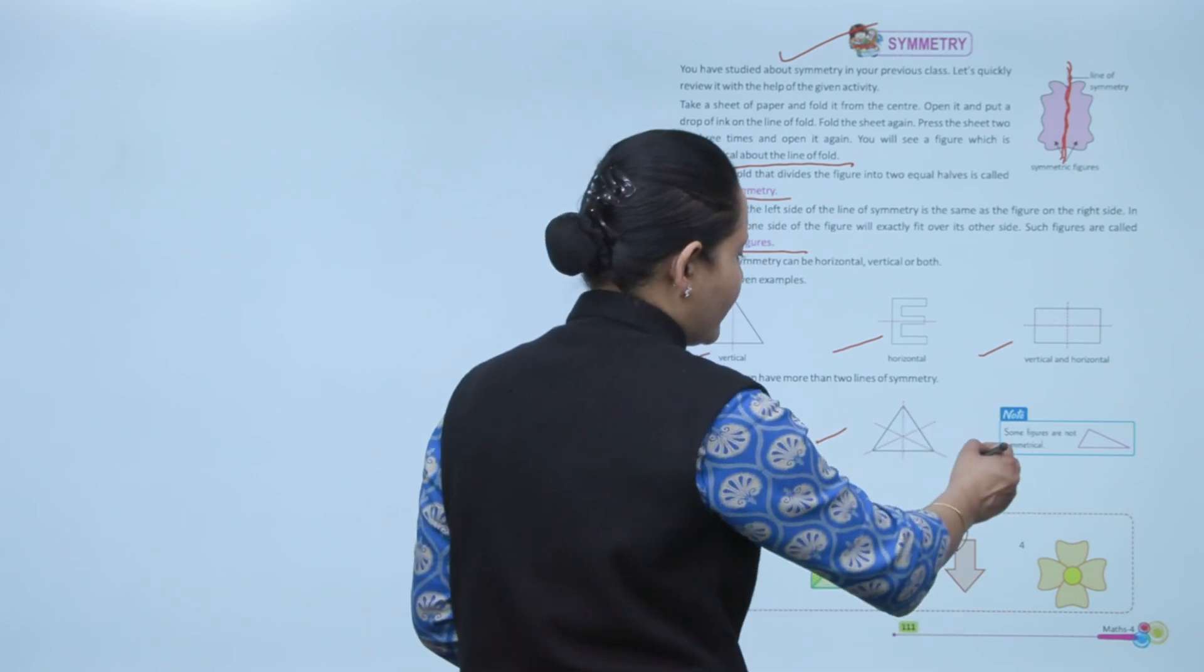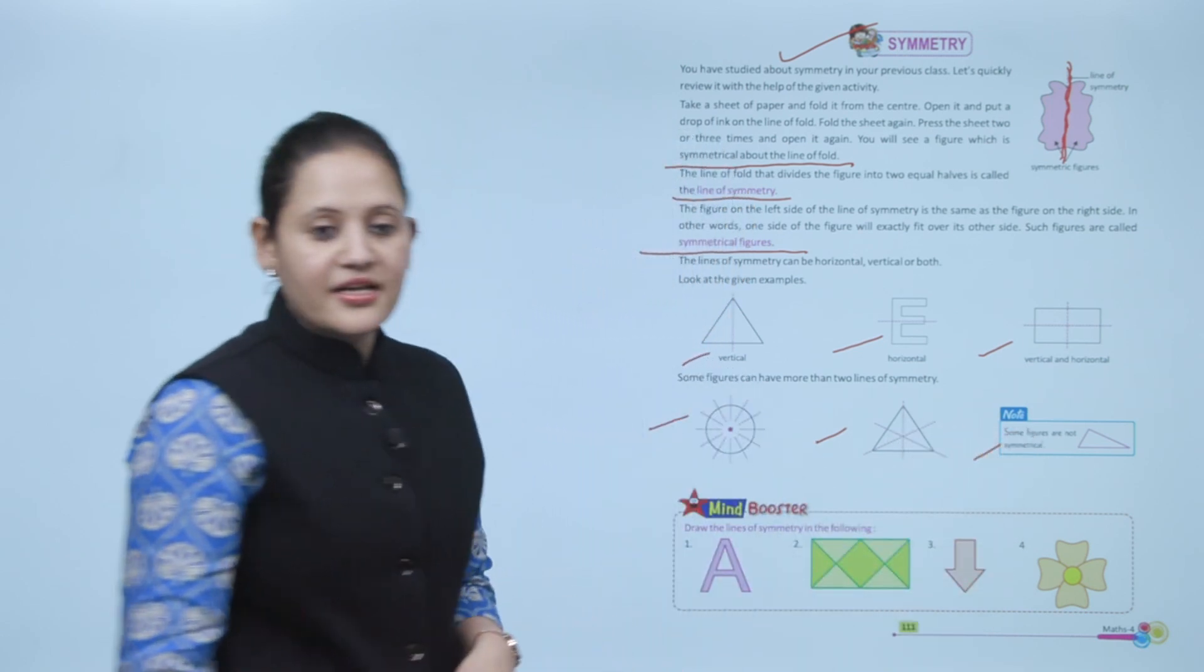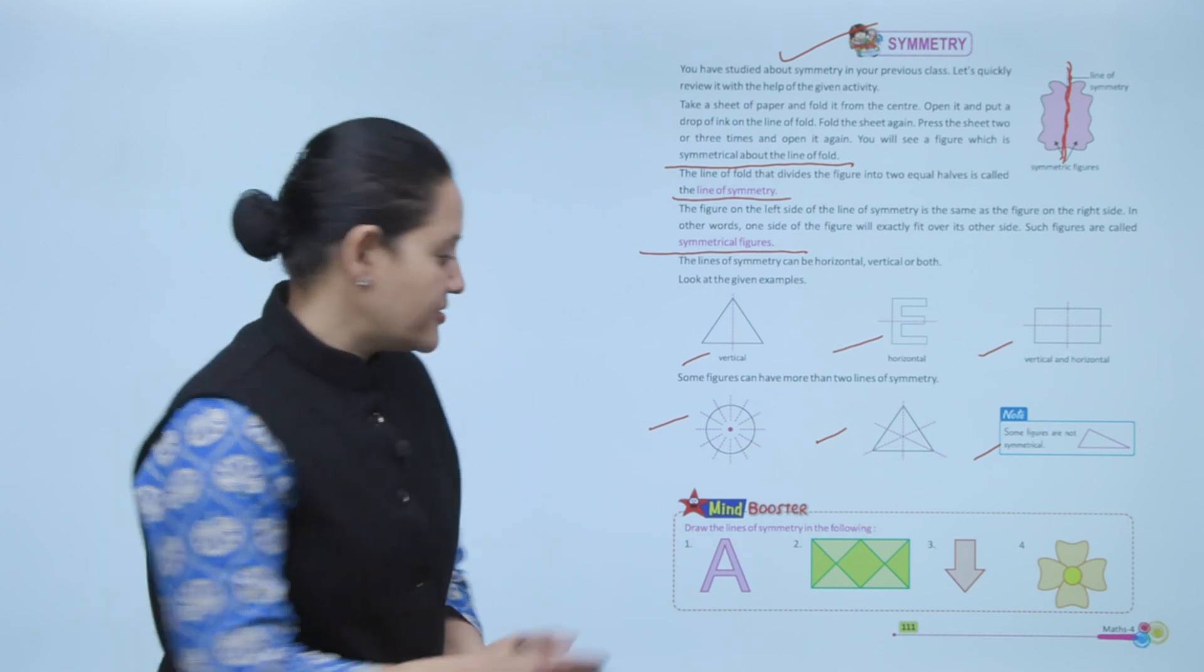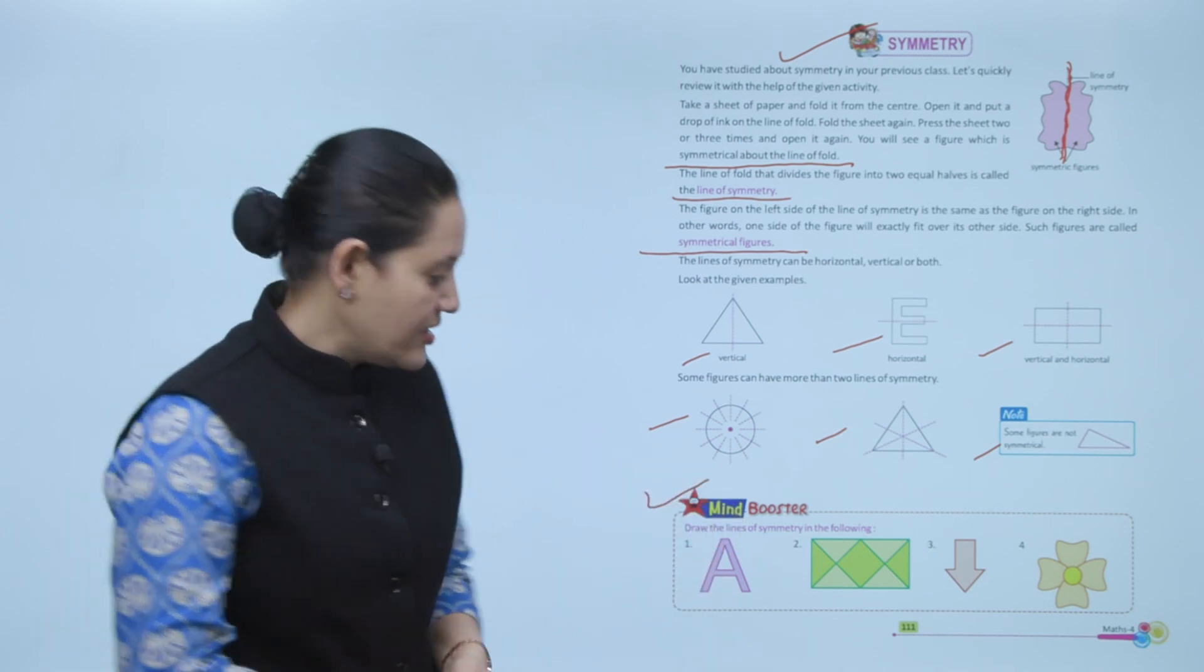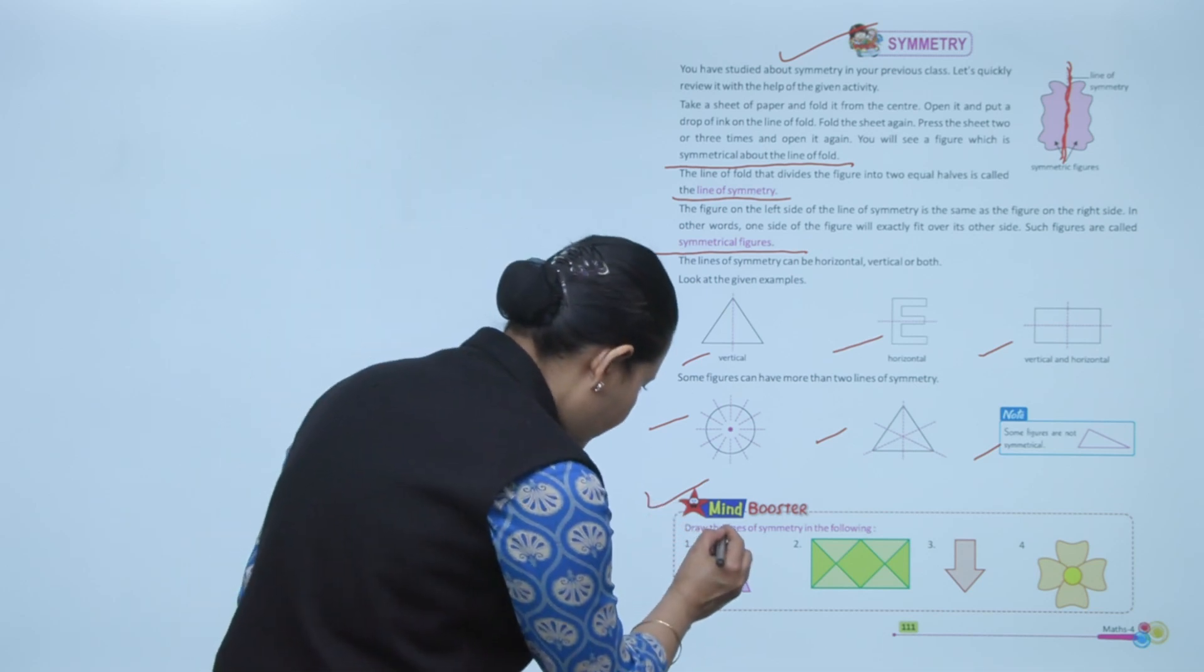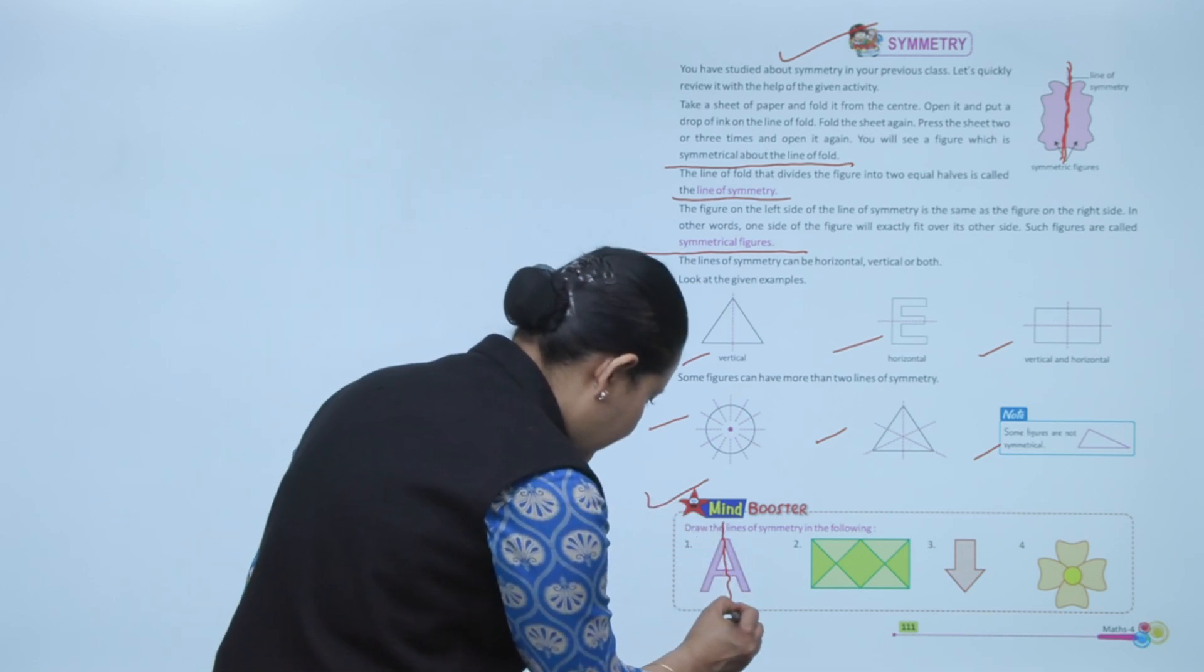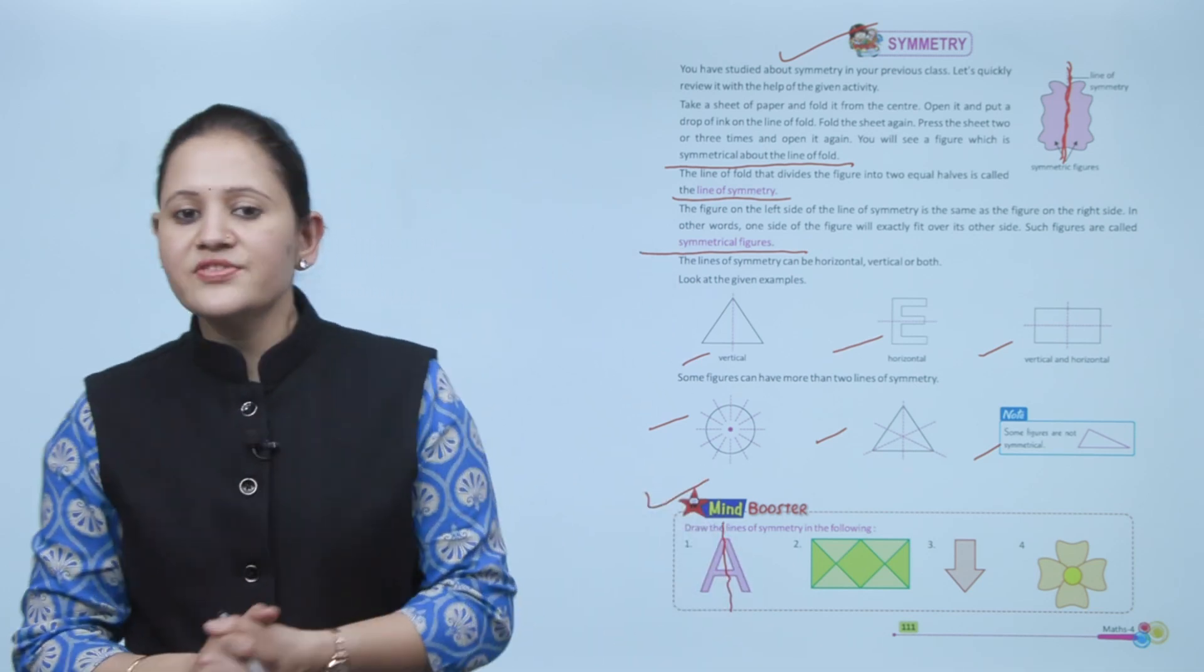Next is Mind Boosters: draw a line of symmetry in the following. We can draw like this - this is the line of symmetry. Clear.